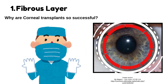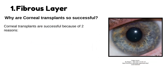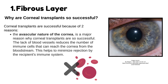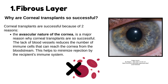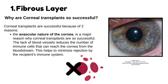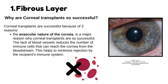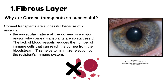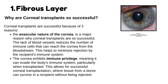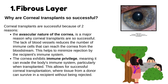Why are corneal transplants so successful? Corneal transplants are successful because of two reasons. The avascular nature of the cornea is a major factor — the lack of blood vessels reduces the number of immune cells that can reach the cornea from the bloodstream, helping to minimize rejection by the recipient's immune system. Additionally, the cornea exhibits immune privilege, meaning it can evade the body's immune system, allowing tissue from a donor to survive in a recipient without being rejected.